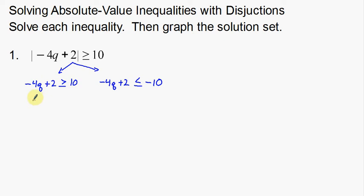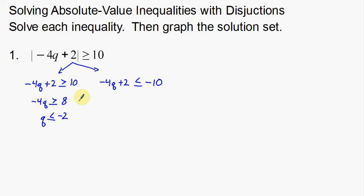So subtract 2: negative 4q is greater than or equal to 8. Then divide by negative 4 — remember, when you multiply or divide by a negative, you switch the symbol. So dividing by negative 4, I get q less than or equal to negative 2, because 8 divided by negative 4 is negative 2.